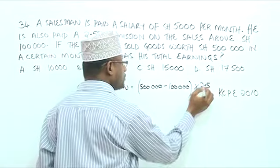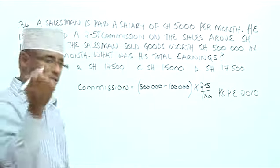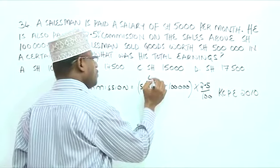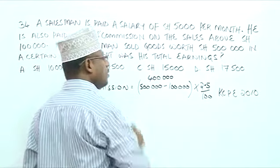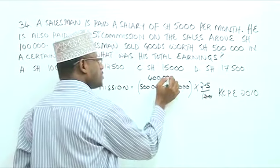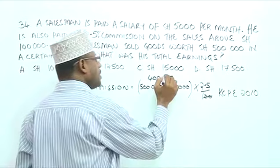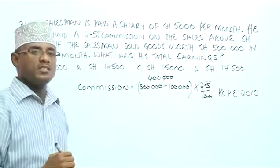Okay, so how much is $500,000 minus $100,000? $400,000. So, $400,000 multiplied by 2.5 over 100. So, $200,000 is going to be used to remove the decimal. It's going to be $25,000.